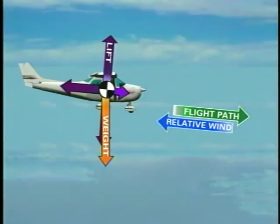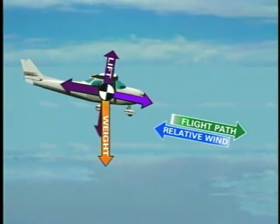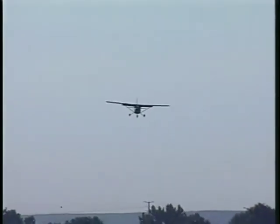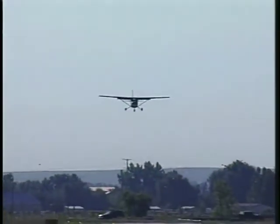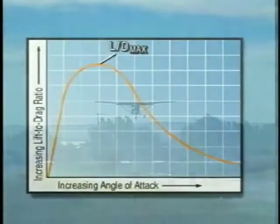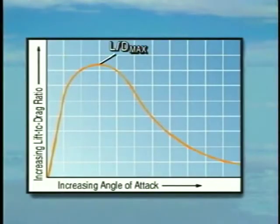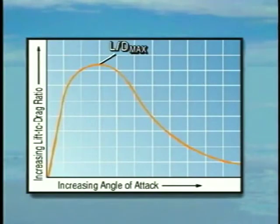If the force of thrust is removed by reducing the power to idle, the forward component of weight must be increased to counteract the force of drag. In order to maintain the same airspeed, the nose must be lowered even further. In a gliding descent, the best glide angle and the best glide distance result from flying the airplane at an angle of attack which provides the least amount of total drag for the corresponding lift. This angle of attack is referred to as the maximum lift-to-drag ratio, or LD max, and the aircraft's best glide speed is normally achieved at this angle of attack.